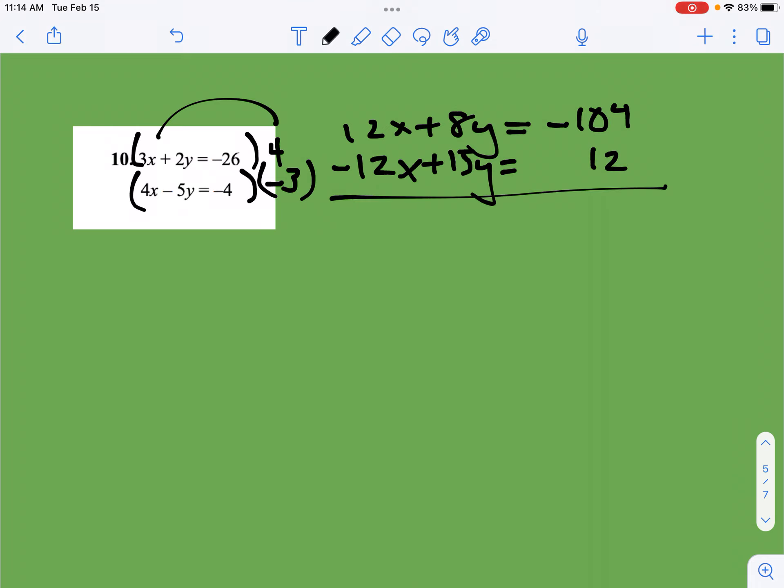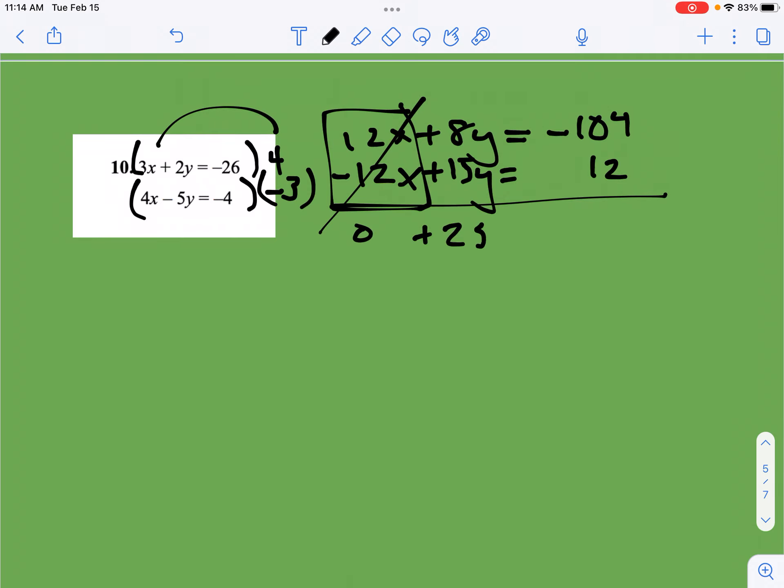So now I have a situation where my x terms will cancel each other out. I want either my x or my y terms to cancel out so I get this thing down to one variable. So those go away, leaving me with zero. And then I have 23y equals negative 92. Divide both by 23, and you should get y is equal to negative 4.